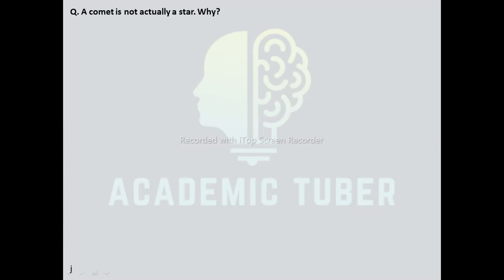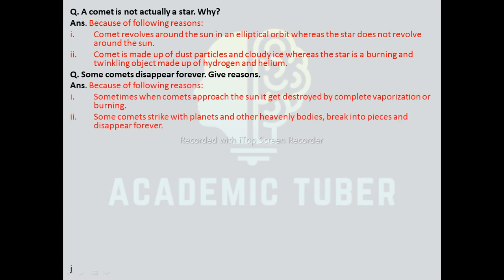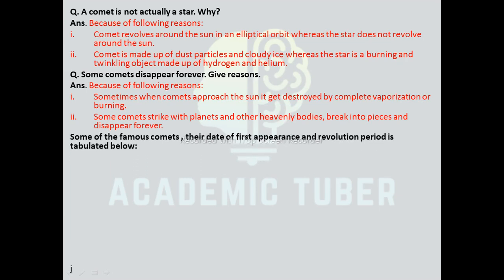Why is a comet not actually a star? A comet revolves around the Sun in an elliptical orbit, whereas a star does not revolve around the Sun. A comet is made of dust particles and cloudy ice, whereas a star is a burning and twinkling object made of hydrogen and helium. Why do some comets disappear forever? Sometimes when a comet approaches the Sun, it gets destroyed by complete vaporization or burning. Some comets strike with planets and other heavenly bodies, break into pieces, and disappear forever.